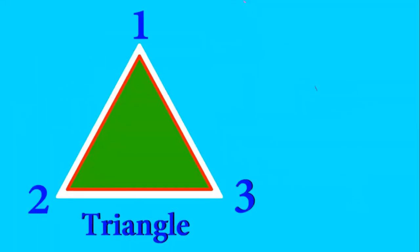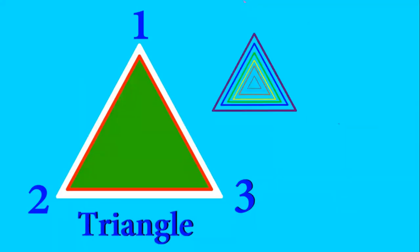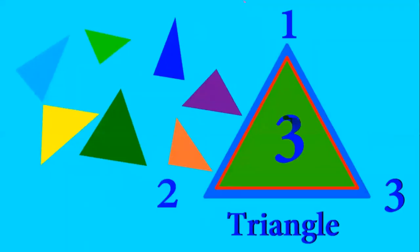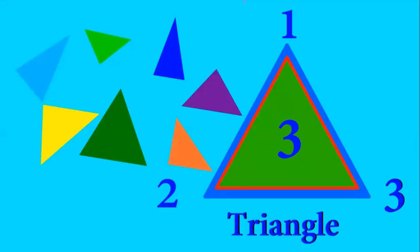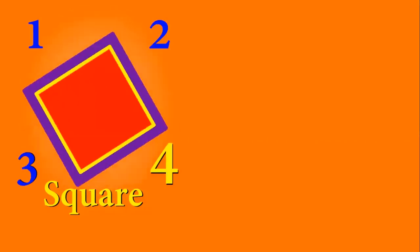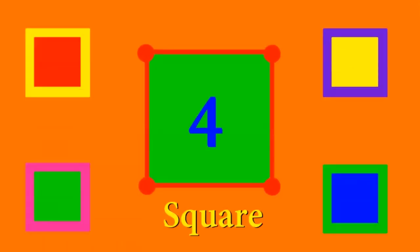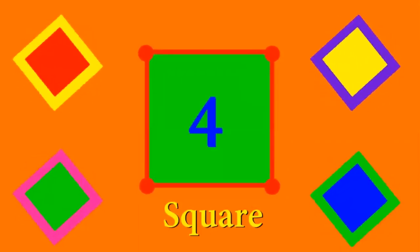Three sides. A triangle has three sides. Four sides. A square has four sides.